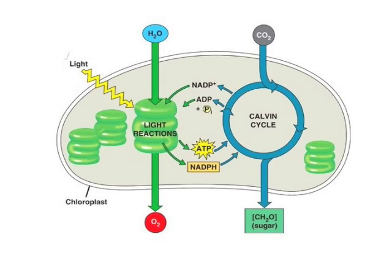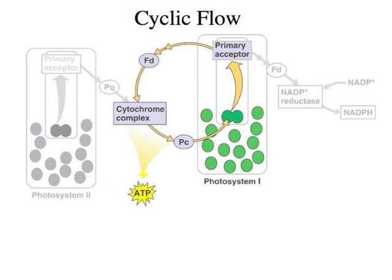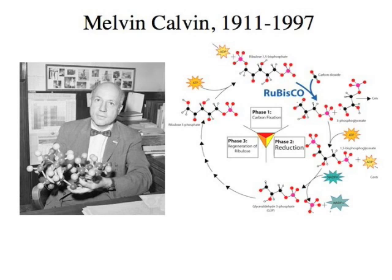Thanks for joining us for episode 2, where global photosynthesis waits for you. We last saw how gland cells create O2, ATP, and NADPH. Now we'll start with a twist on the light reactions called cyclic flow. We'll see how it happens, then we will investigate how the Calvin cycle makes carbohydrates.